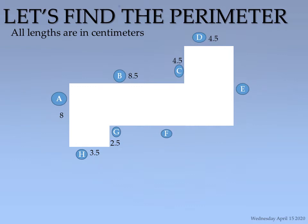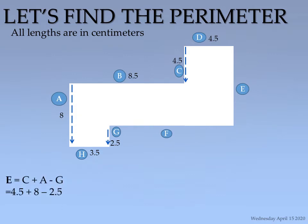We're going to add line C to line A, but we need to take the excess of line A away. The excess of line A is on line G, which is 2.5, so we subtract line G from line A. That means line E equals line C plus line A minus line G.